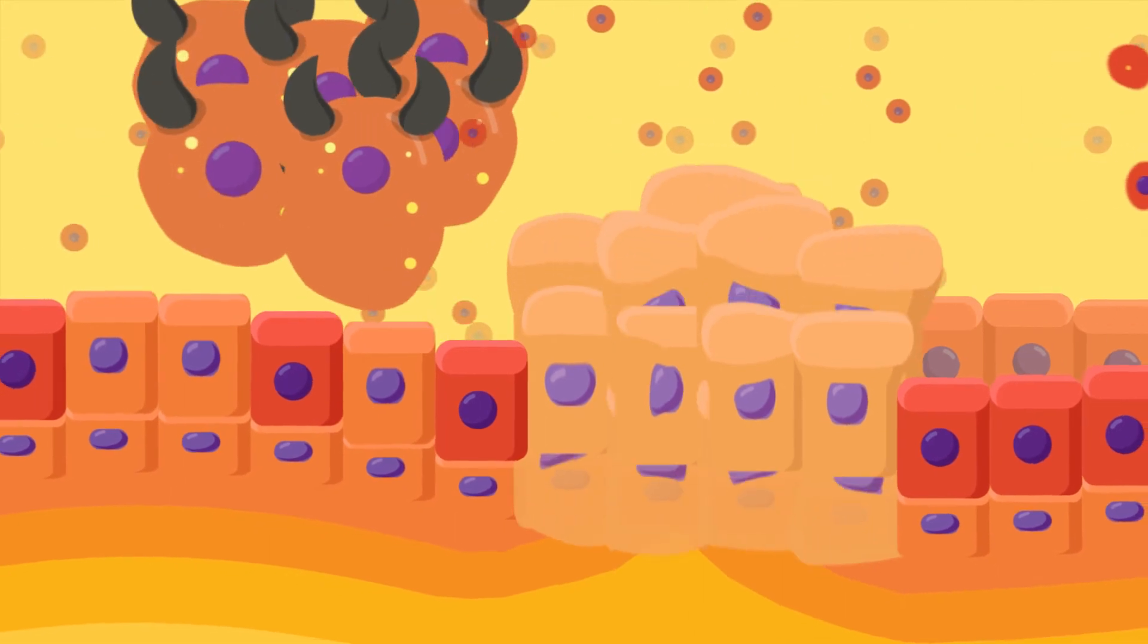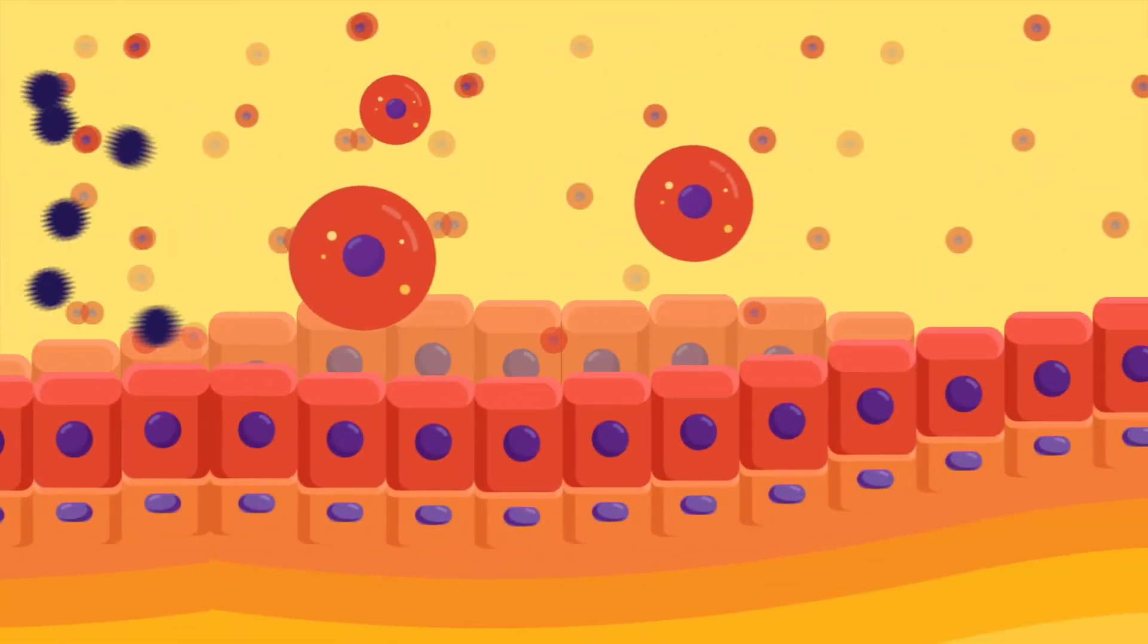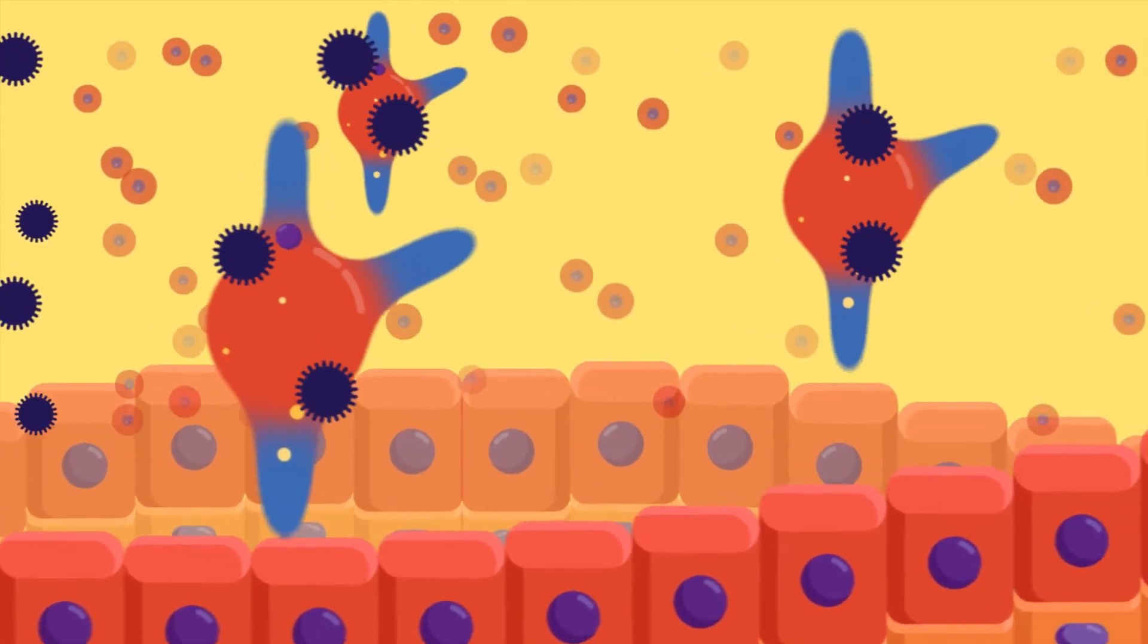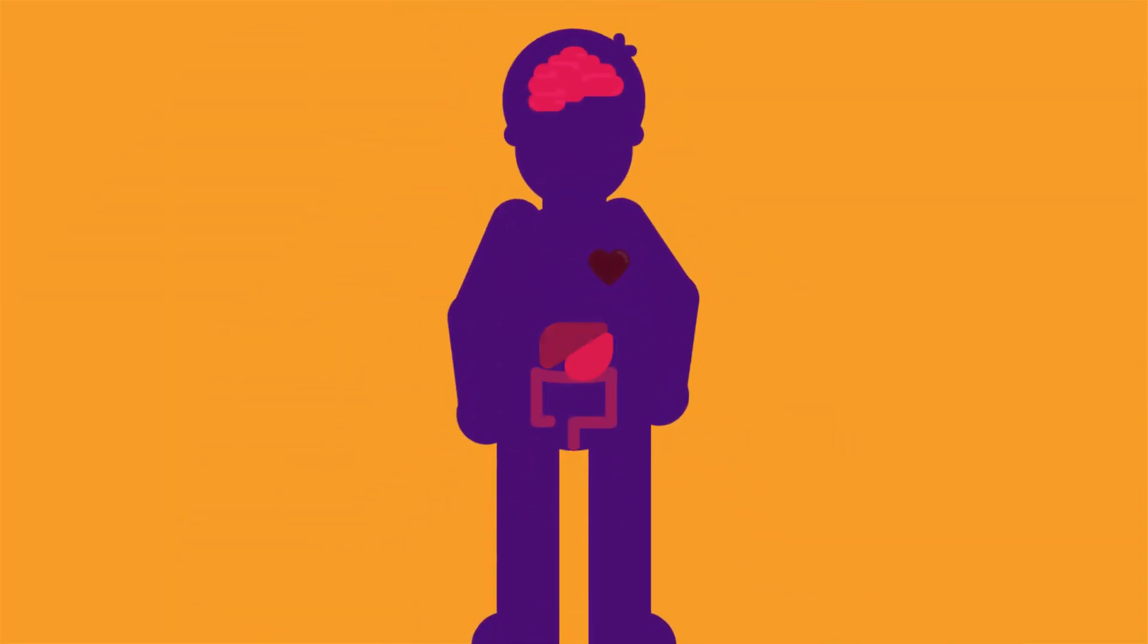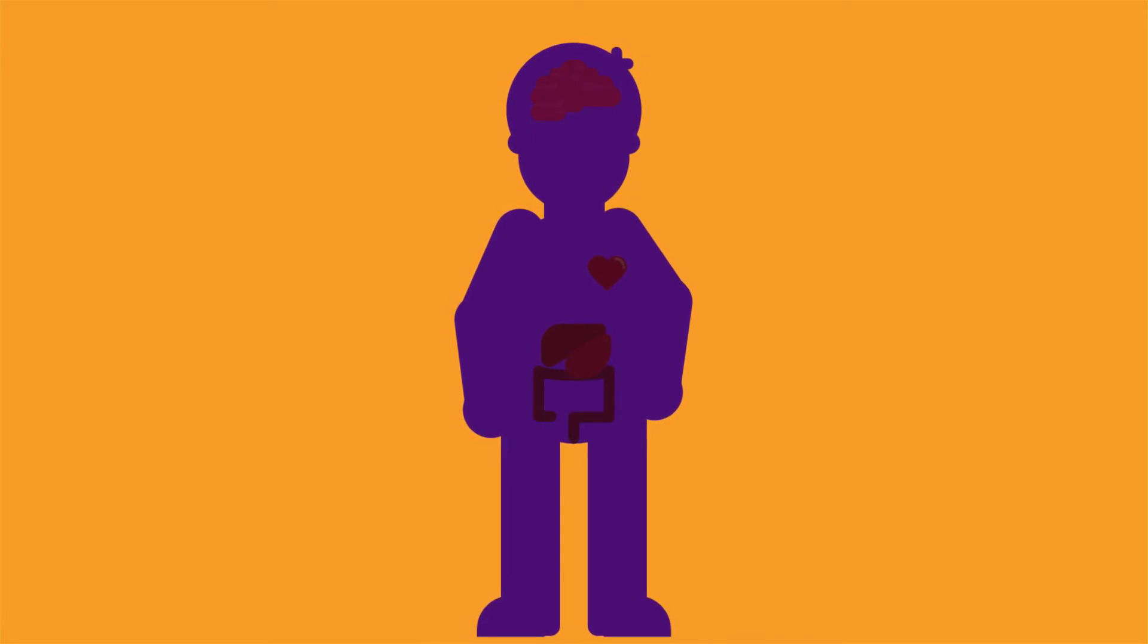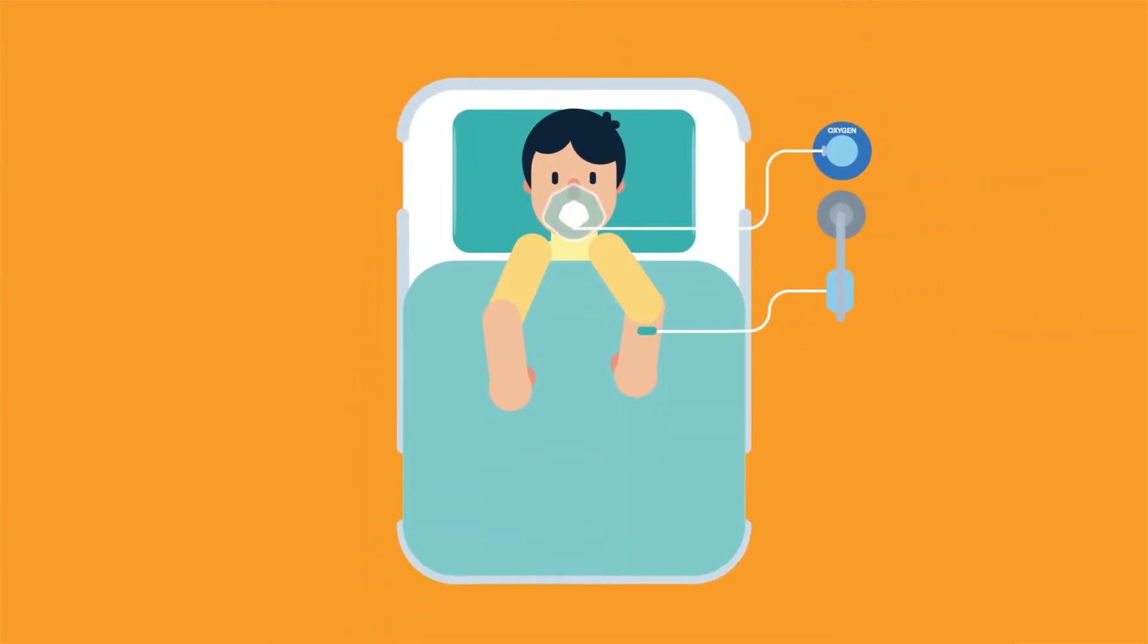If cells die too fast, it can lead to conditions such as AIDS, heart disease, and liver disease. So if apoptosis does not take place as it should, there will be signs of disease.